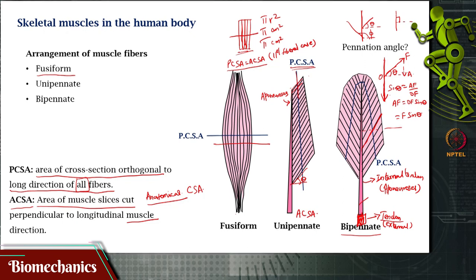Sometimes θ can be very low, meaning a lot of the force produced by the fiber is not along the direction of the internal tendon, external tendon, or bone — it is not fully transmitted. So this angle plays a crucial role in force transmission. This angle is called the pennation angle. A given muscle can have many pennation angles depending on how many different pennations it has. A bipennate muscle will have 2 pennation angles; a multipennate muscle can have many pennation angles depending on how many different orientations the fibers are arranged in.